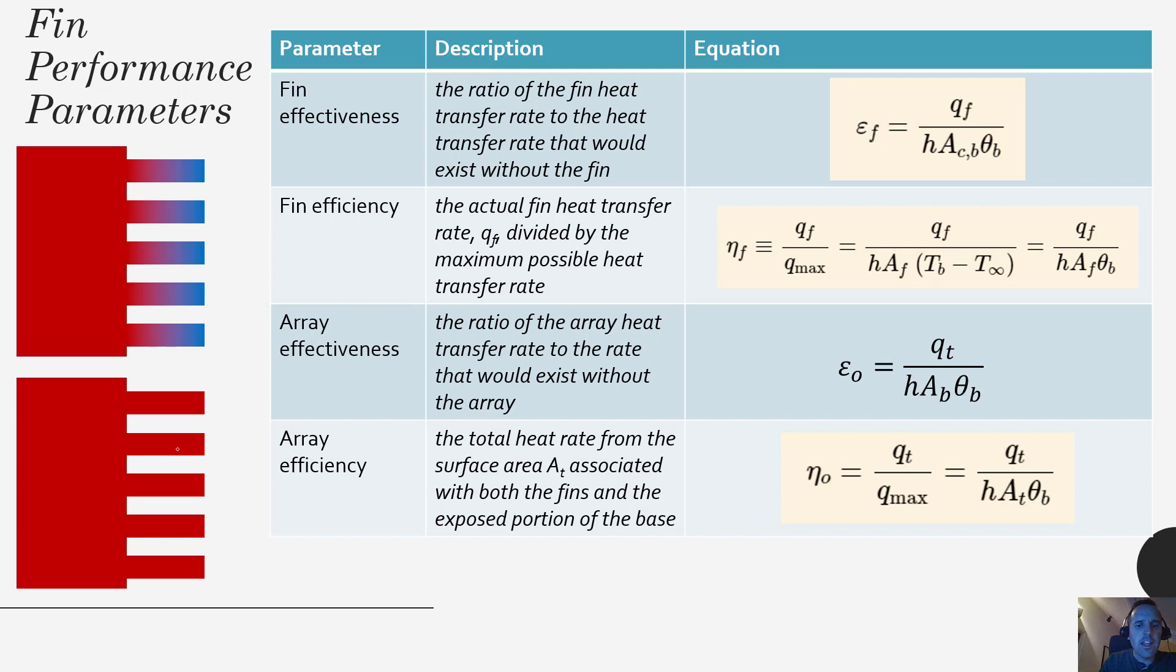Okay then finally we have the array efficiency. So the array efficiency is the total heat rate from the surface a sub t associated with both the fins and the exposed portion of the base. So again we're using that qt which considers the fins and the exposed base and now that is relative to the entire array as if it were all at the base temperature.